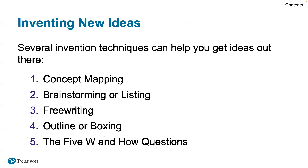When inventing new ideas, several techniques can help you get ideas out there. Concept mapping — we've been thinking about that in this course as we map out our writing. Brainstorming or listing can be another helpful approach; for a period of time, the laws of physics don't apply — just get things out there. Free writing helps capture ideas that can be useful. Having an outline or boxing things into areas, and using the 5W and how questions, can help us get a sense of where things are and where we want to go.